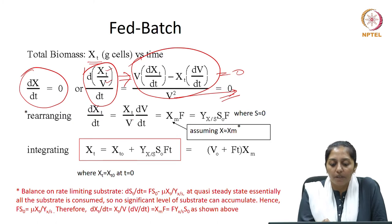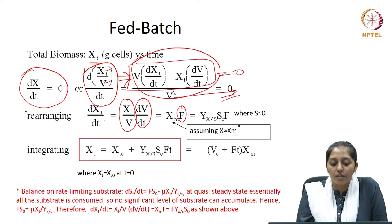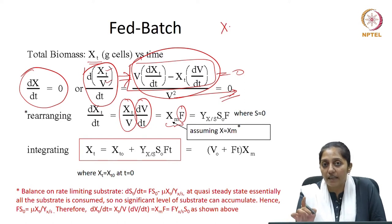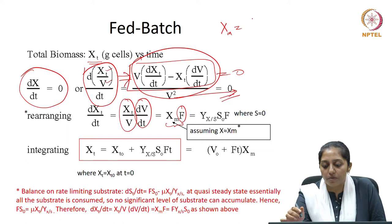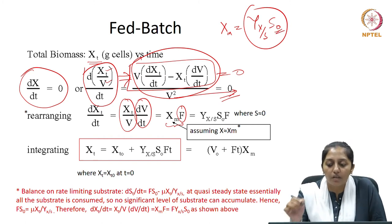Therefore, dxt/dt becomes equal to xt/v times dv/dt. Now dv/dt can be replaced as f, and this is xt/v — some concentration. Assuming the purpose of the fed-batch is to achieve maximum cell concentration, we let this be xm. At constant yield of biomass, we assume yx/s which is the theoretical maxima, and in terms of that we write it as yx/s times s₀. This can be the maximum biomass concentration achieved, where s₀ was the initial substrate concentration.